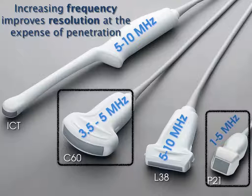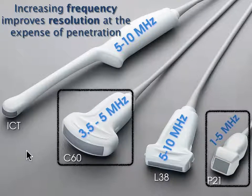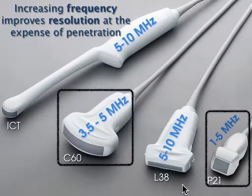You can see the bladder using the intracavitary transducer from within the vaginal vault, but it causes a lot of artifacts because of the tight curvature of the probe. We always recommend women have a completely empty bladder for endovaginal ultrasound. Unless somebody is really thin with a very full bladder, it would be hard to see the bladder with the L38, especially in an average-size or larger patient.